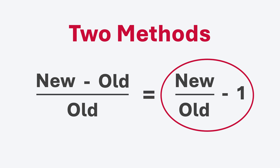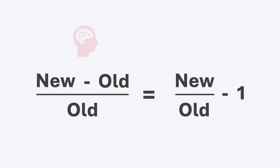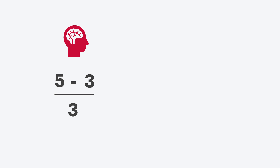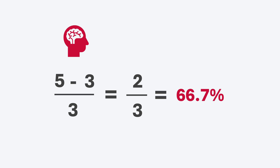I actually use both — there are two different use cases. When doing the calculation in my head, I use the first one: new minus old over old. When using a calculator or spreadsheet, I use new over old minus 1. For mental math, the first formula is easier because you can narrow down to 2 over 3, and two-thirds is 66.7%. So the fractions are often simpler. It's not always the case, but that first method is just easier for me.